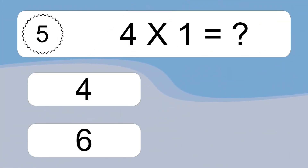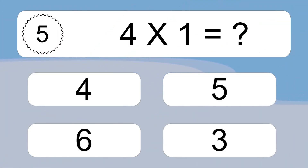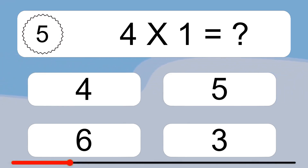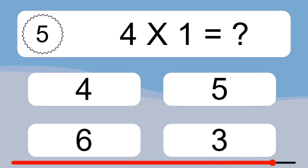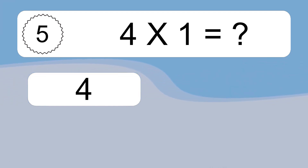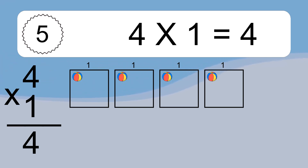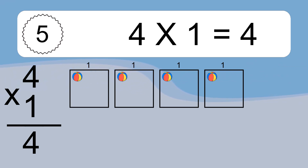4 times 1 equals what? 4 times 1 equals 4. We have 4 boxes, and each box has 1 colorful ball inside. If you count all the balls in all the boxes together, you will have 4 times 1 balls. This equals 4 balls.